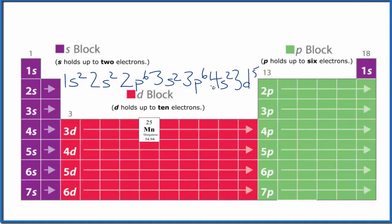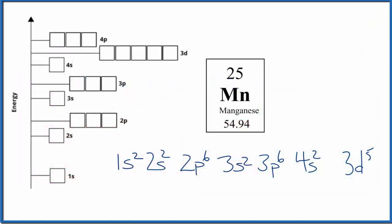So now that we have the configuration, the electron configuration, we can write the atomic orbital diagram for manganese. Both of these notations are just trying to show where the electrons are around the nucleus of the manganese atom. You can kind of think of the nucleus down here, and these are energy levels, kind of like shells, around the nucleus.